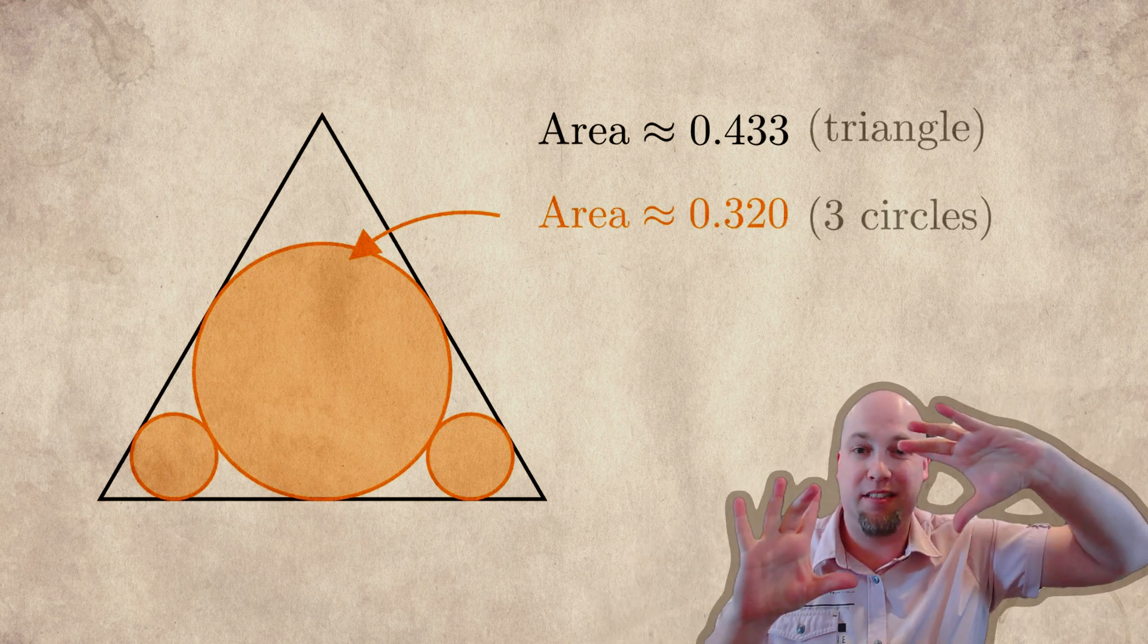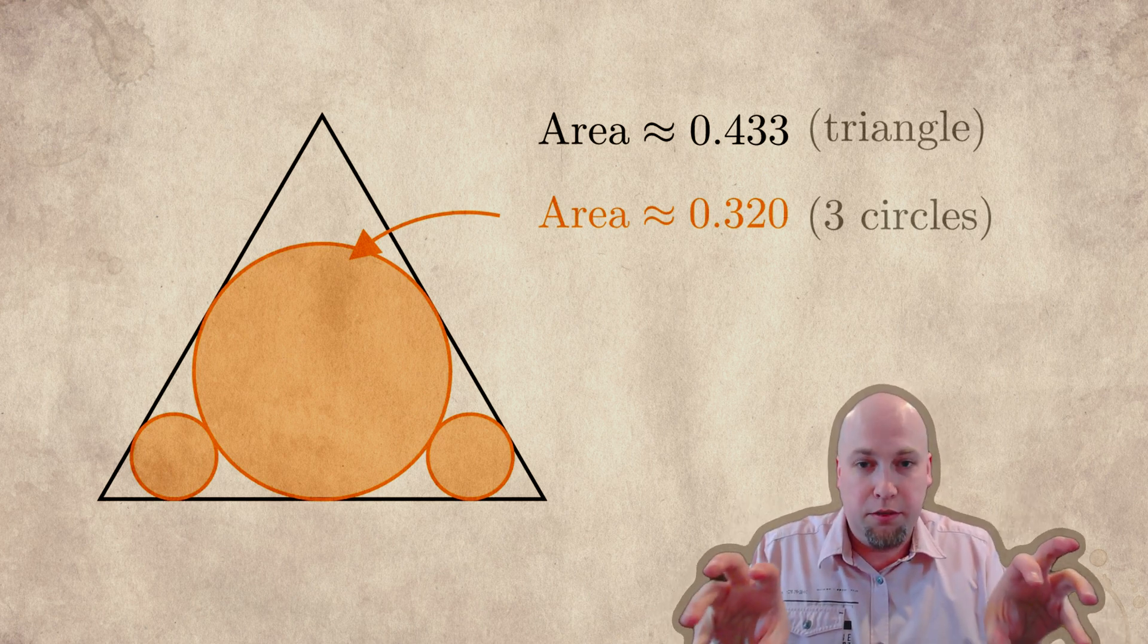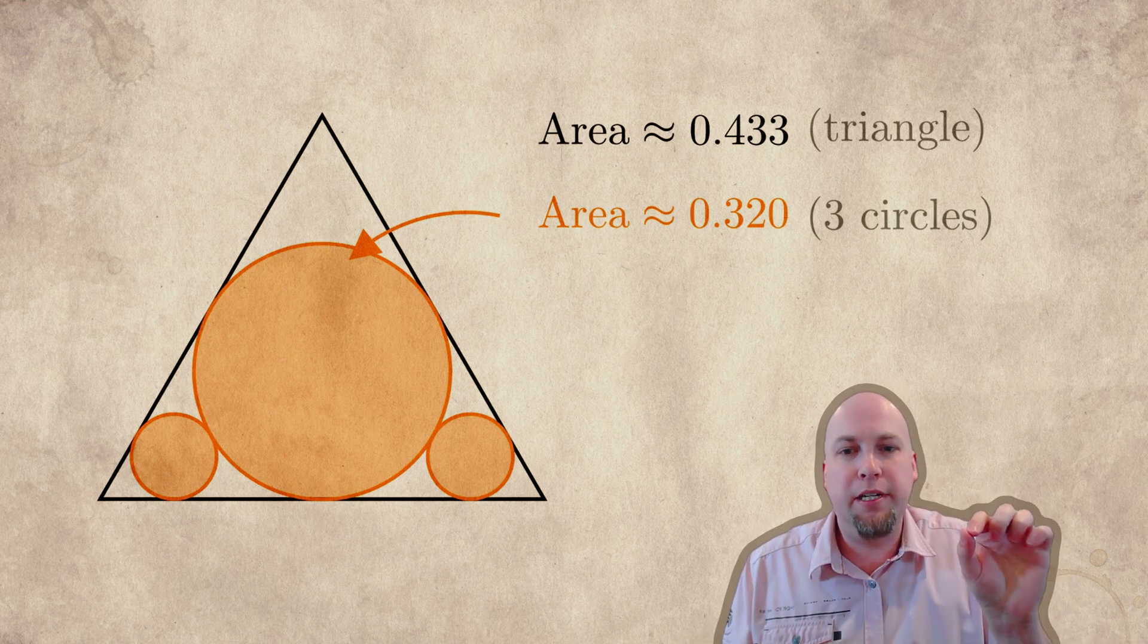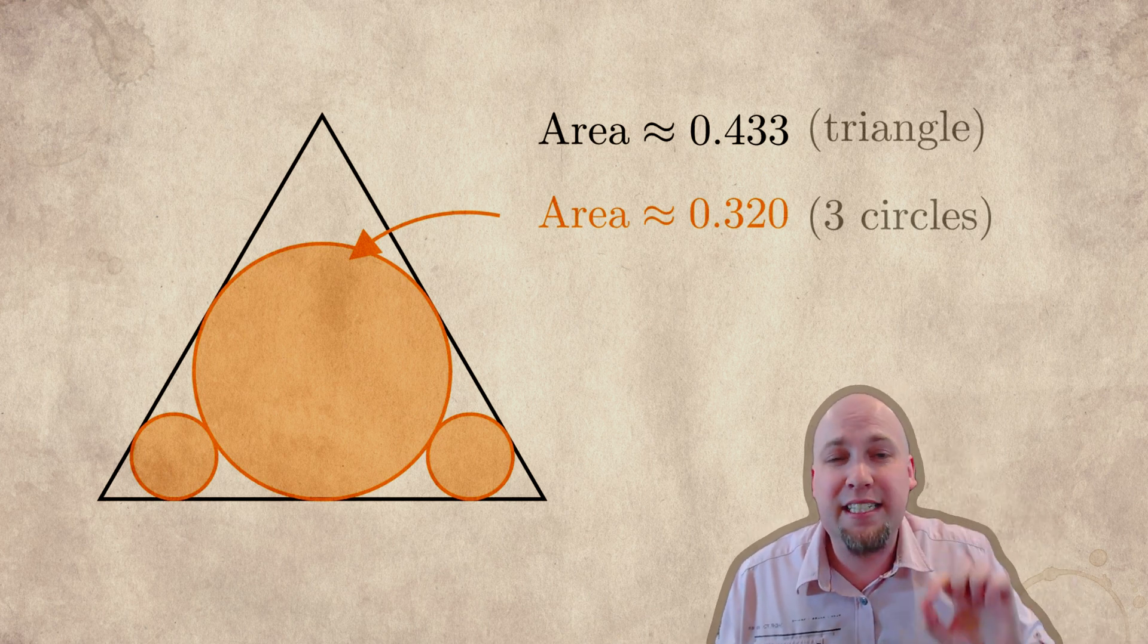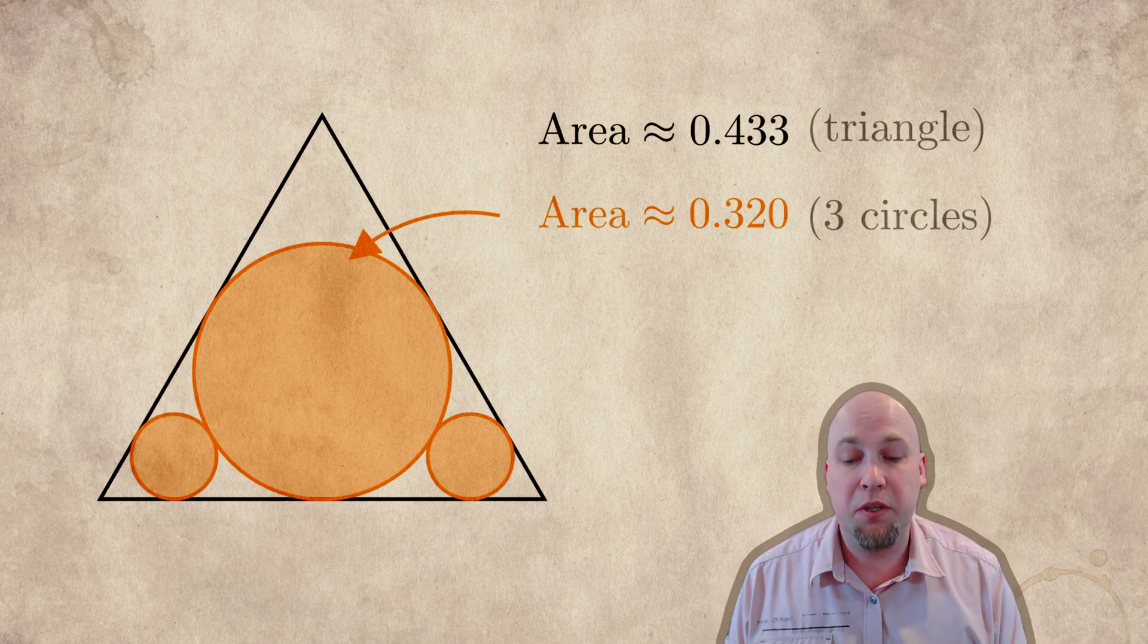And if you go all the way to the most extreme configuration that you possibly could, where the first circle, the top one is as large as possible while still being inside the triangle, and the other two circles are just filling in the corners a little bit, then it turns out the area covered is a teeny, tiny little bit larger than what we had when we used three equally sized circles.